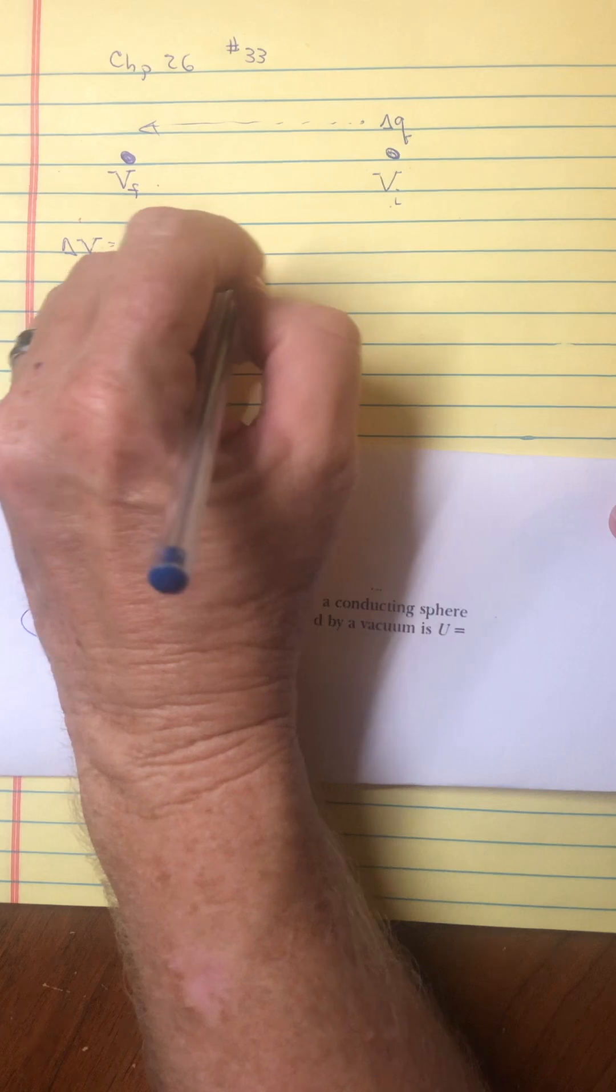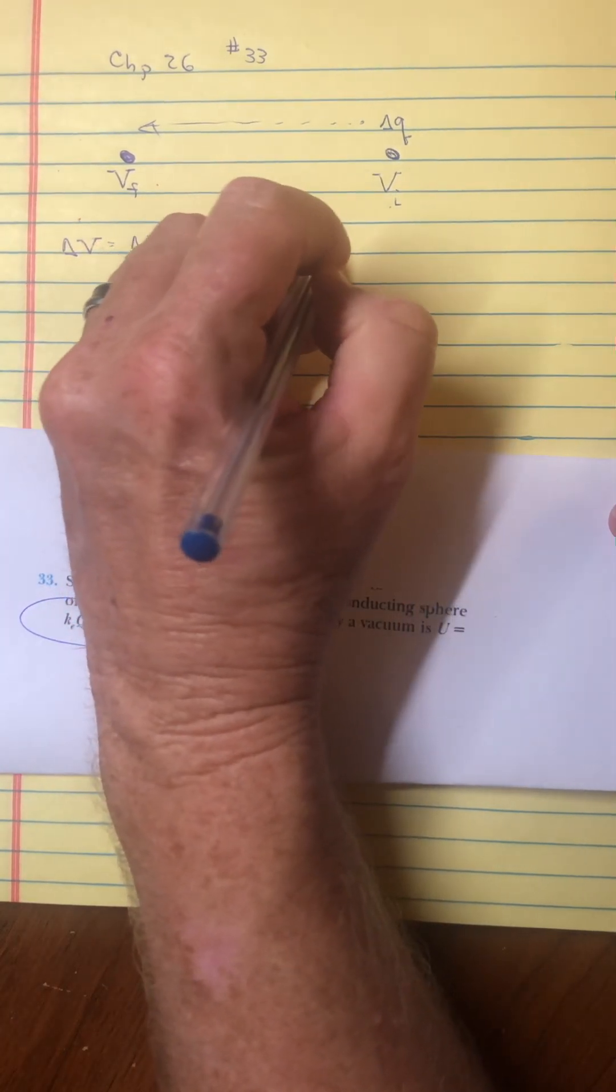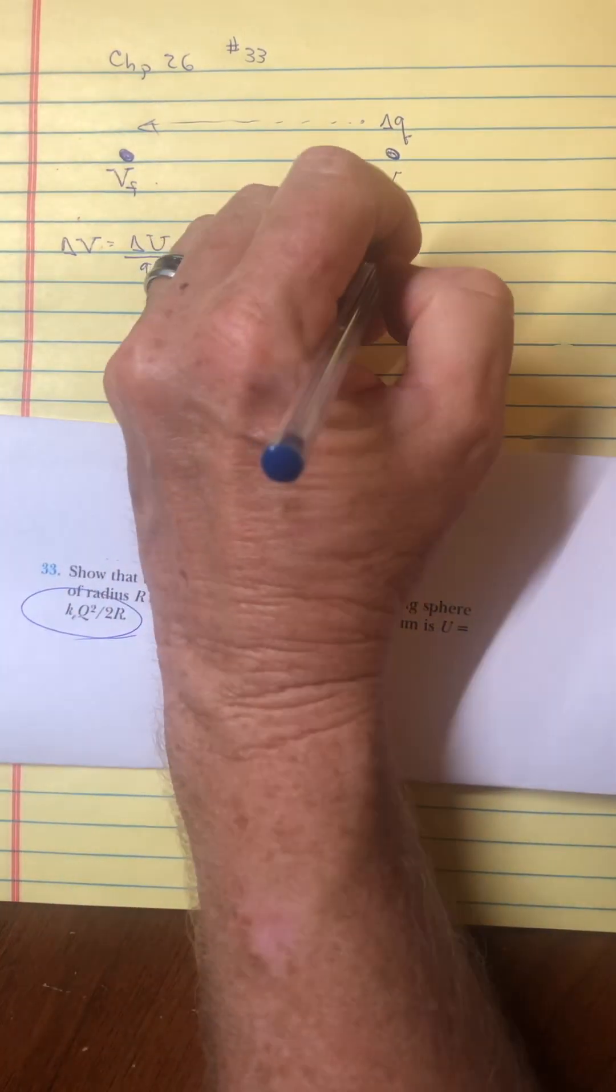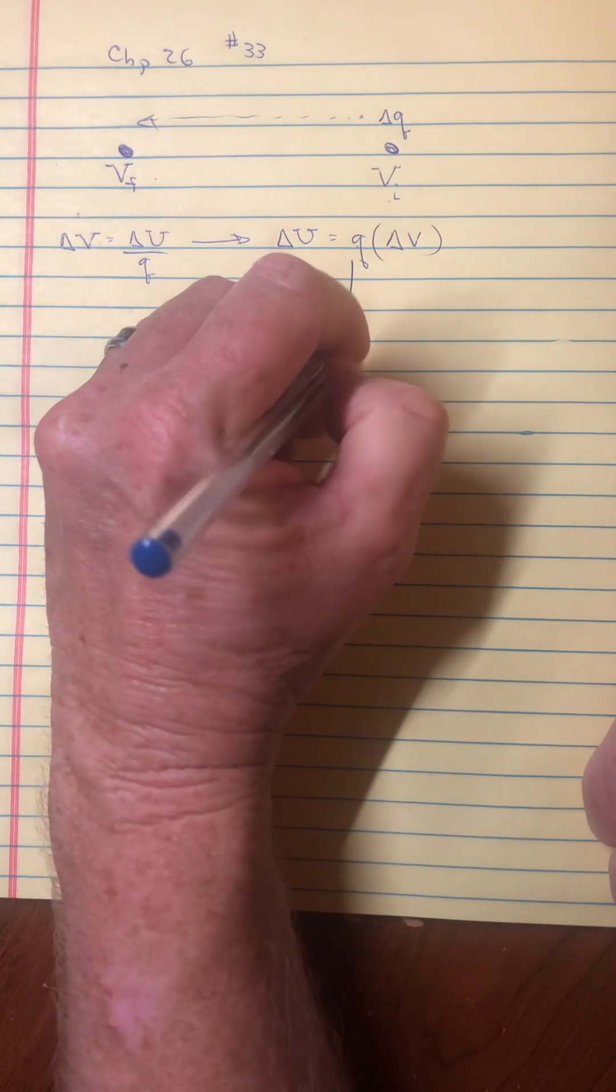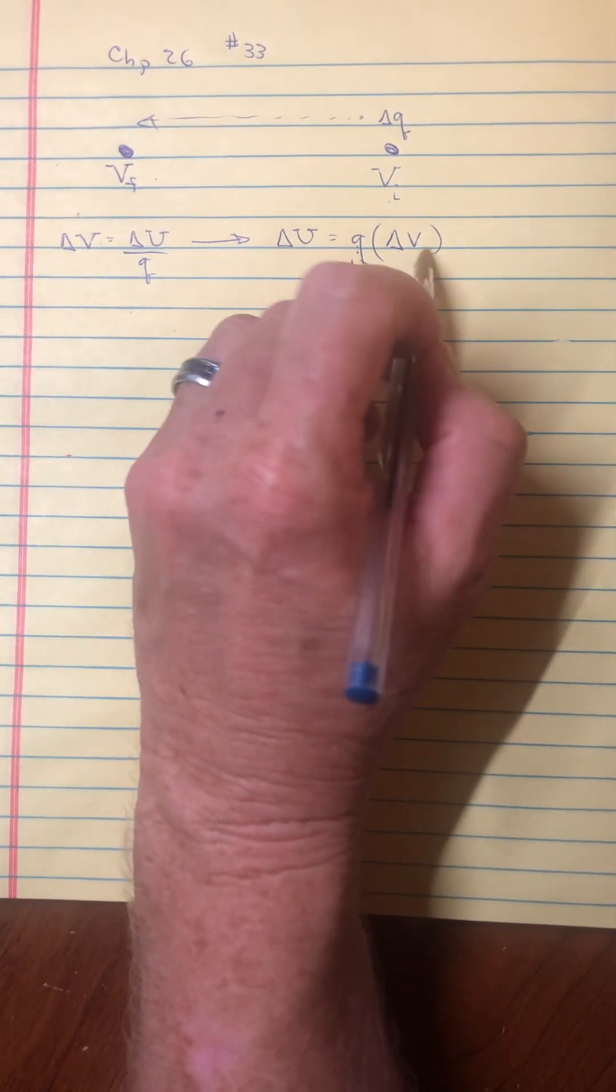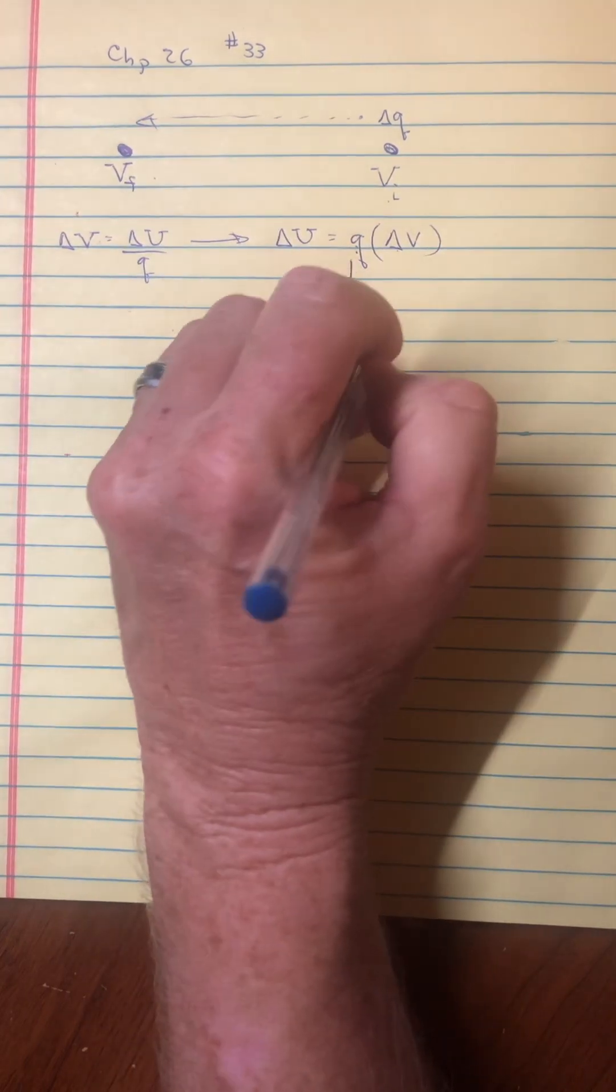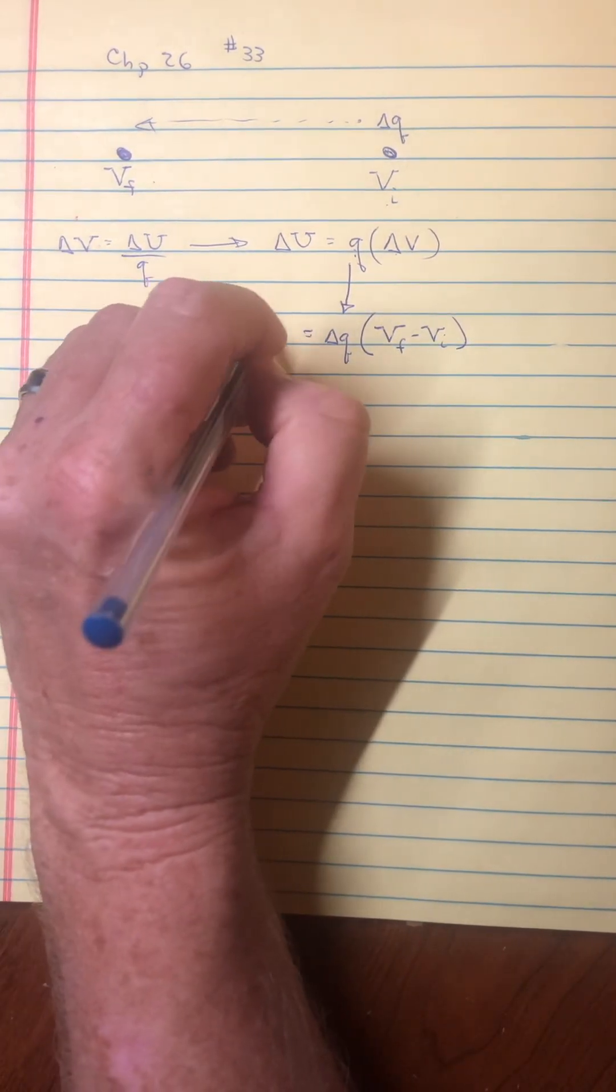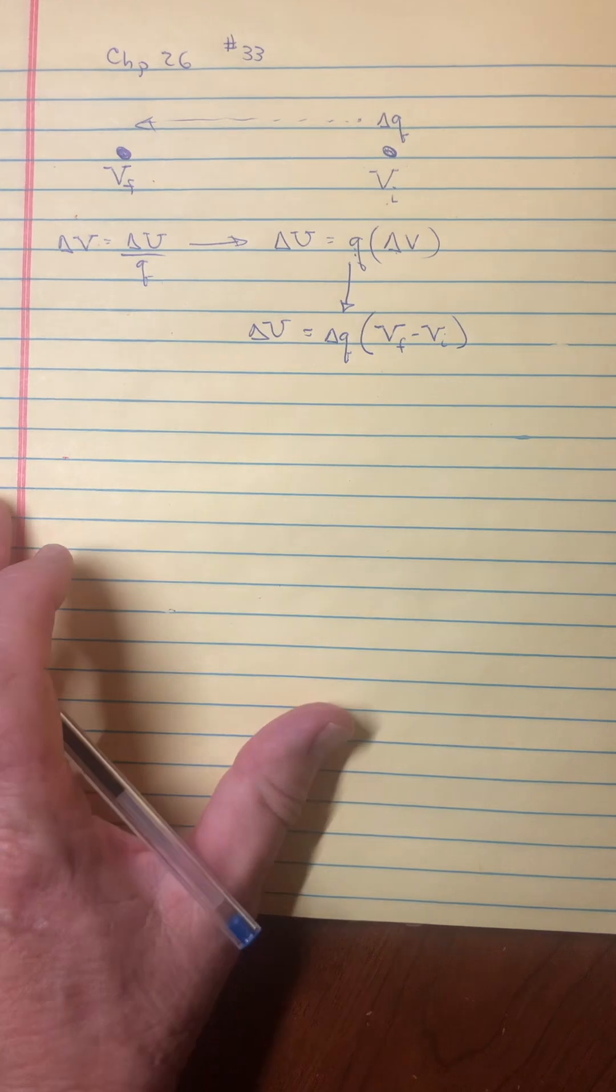Or for this case it might be better to write it this way. The change in energy is equal to how much charge are you moving between these two potentials. So in my little model, this Q would be my delta Q, a small little charge, and my change in voltage would be final minus initial. That would be the change in energy.